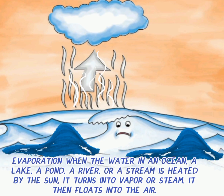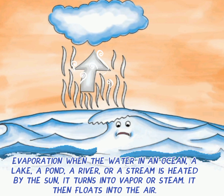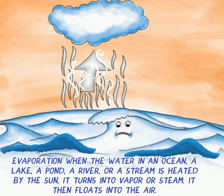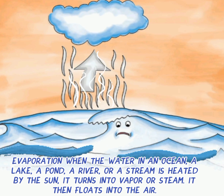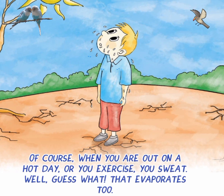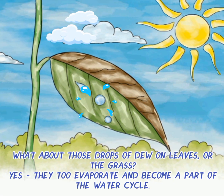Evaporation: when the water in an ocean, a lake, a pond, a river, or a stream is heated by the sun, it turns into vapor or steam and floats into the air. Of course, when you are out on a hot day or you exercise, you sweat — and that evaporates too. What about those drops of dew on leaves or the grass? They too evaporate and become a part of the water cycle.